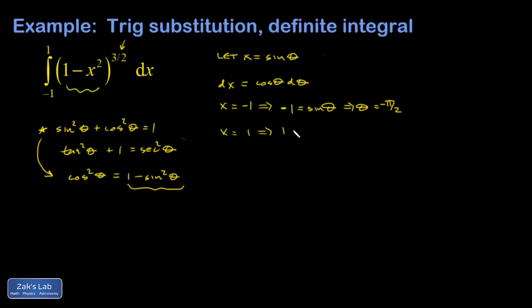When x equals positive 1, that means 1 equals sine theta. What angle gives me a sine equal to 1, and that's pi over 2. So these limits transform to negative pi over 2 to pi over 2.